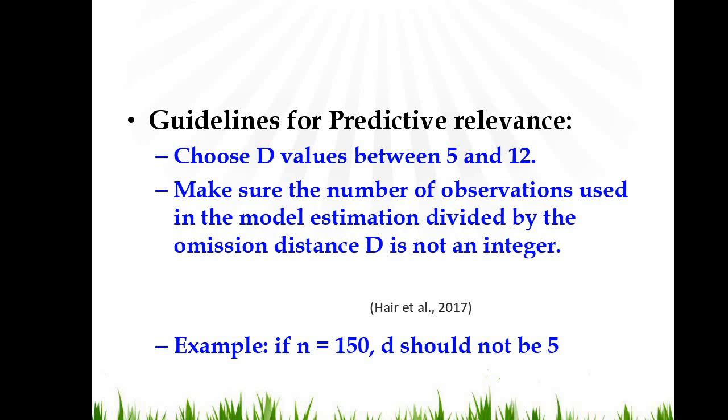Some researchers also recommend a range from 5 to 10. And one more thing let me add over here. SmartPLS omits data points. For example, if you have picked a D value of 7, so every 7th data point will be omitted. And that would be replaced by a mean value and SmartPLS will run the model. Right? And in the second round, it will continue with different data points.